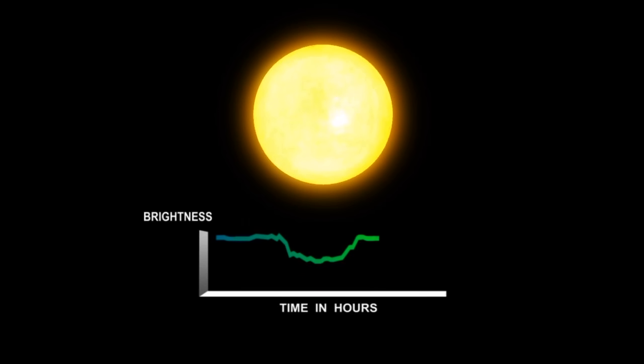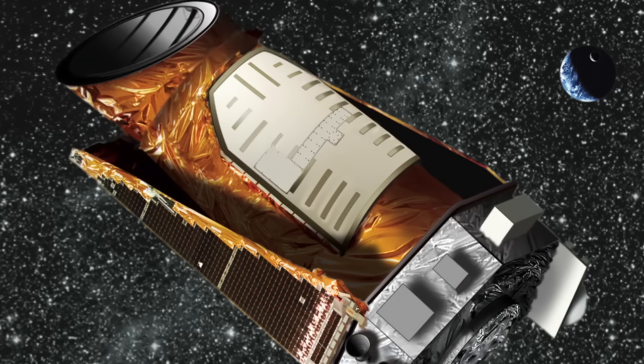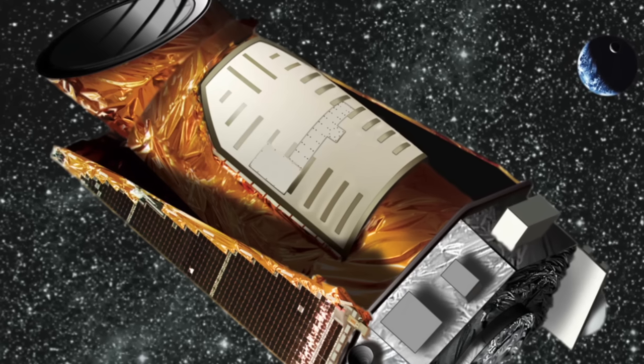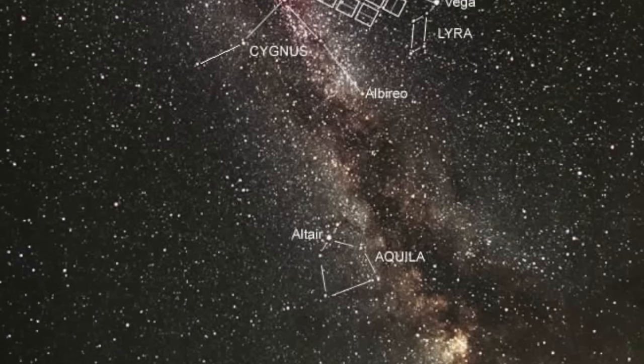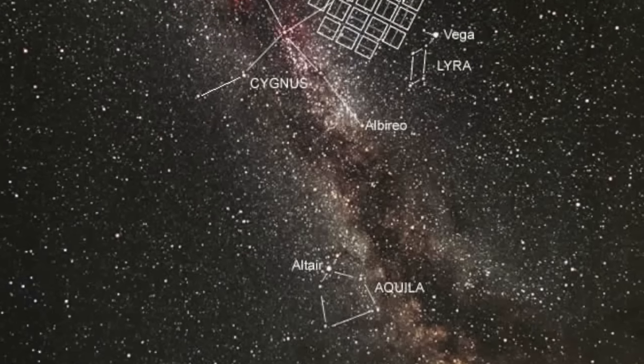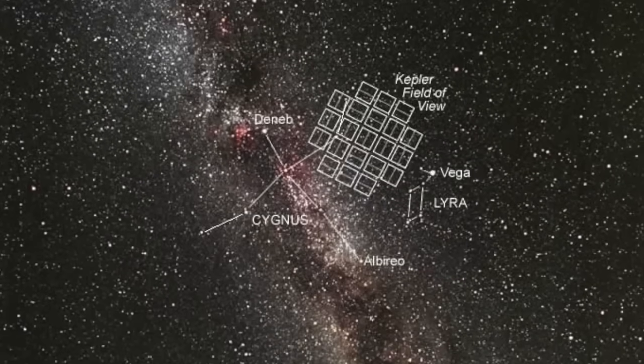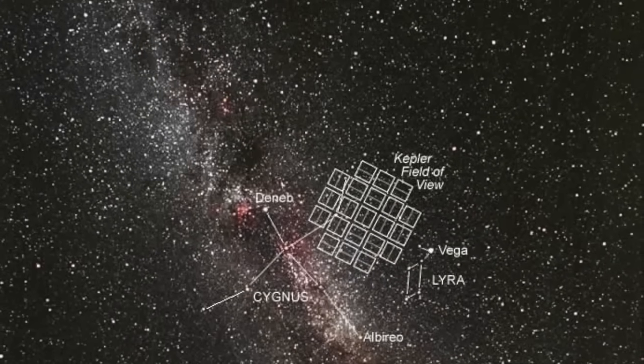But it also collected an absolute mountain of other data requiring the help of amateurs known as the planet hunters to comb through light curves looking for transits. This citizen science program was also quite successful, alerting scientists to the presence of many exoplanets. But there were also anomalies spotted by the planet hunters, and one of these was the star KIC 8462852.